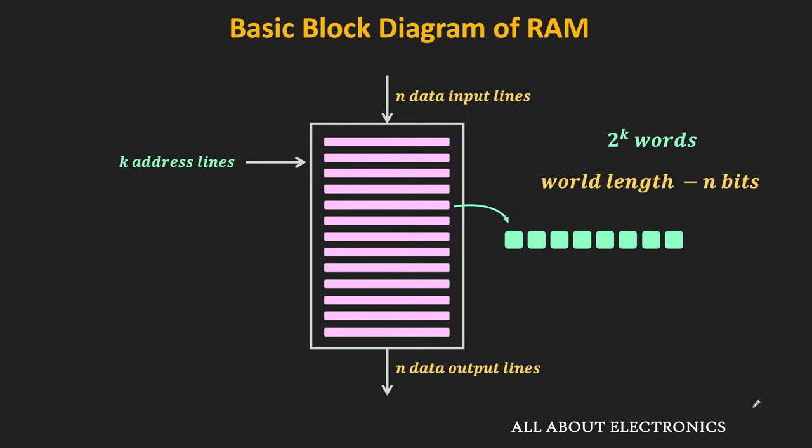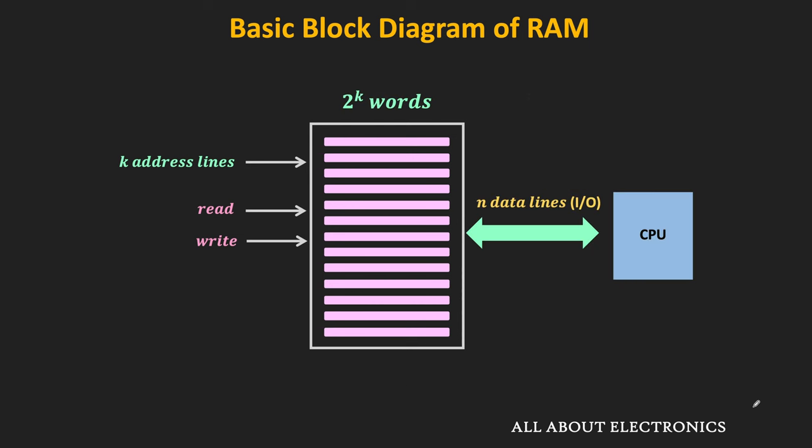To perform read and write operations, we also require 2 control signals. Typically in RAM, instead of having separate data lines for inputs and outputs, the same data lines are used for both input and output — that means these data lines are bi-directional.